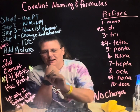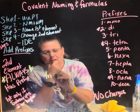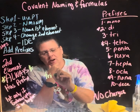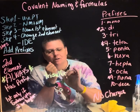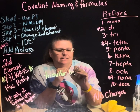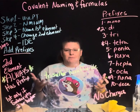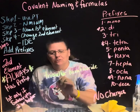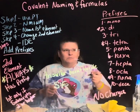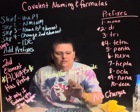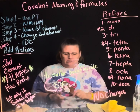Now let's go from a name to a formula. Take 'trisulfur hexafluoride.' To make the formula, do the opposite: write the symbol for sulfur and the symbol for fluorine, then convert prefixes to subscripts — tri is three, hexa is six. So the formula is S₃F₆. Prefixes turn into subscripts. No crisscrossing, no drop-and-cross — just bring them straight down.